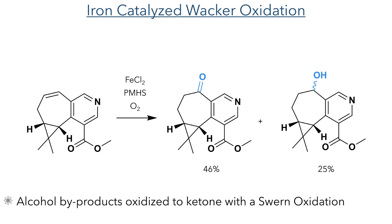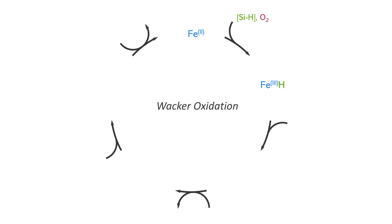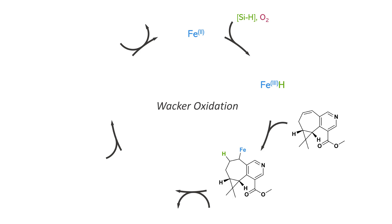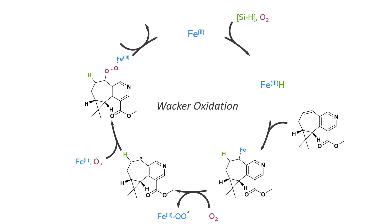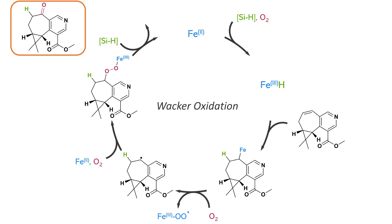With the pyridine moiety now complete, the final stages of the synthesis involved installing the correct functionality on the heptane ring. The internal alkene was now oxidised using an iron-catalyzed Wacker oxidation. This produced a ketone in 46% yield together with an alcohol in 25% yield. The alcohol by-product was oxidised to a ketone using a Swern oxidation to be carried forward. Iron chloride is first oxidised using polymethylhydrosilane and oxygen gas, generating an iron(III) hydride species. This adds to the double bond and the iron is then oxidised with oxygen, which was sparged through the solution to accelerate the reaction. This generates a radical which binds an iron(III) peroxy species, which is then reduced again with polymethylhydrosilane to produce the target ketone and regenerate the iron(II) catalyst.